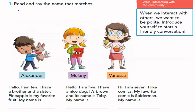Ahora, vamos a hacer un juego — un reto — acerca de qué quiero ver cómo van trabajando el vocabulario. Aquí tenemos three paragraphs, tres párrafos. Vamos a leerlos y me van a decir a quién estoy describiendo. Number one: Hello. I am ten. I have a brother and a sister. Pineapple is my favorite fruit. My name is... ¿Quién está aquí comiendo pineapple? It's Vanessa. My name is Vanessa.